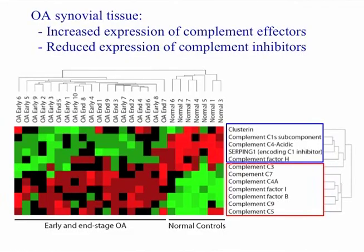We also performed gene array analysis — RNA expression profiling in osteoarthritis versus normal patients. Using bioinformatic clustering, all the osteoarthritis patients grouped together and showed increased expression of multiple complement effector proteins, represented in red. In contrast, synovial tissue from healthy normal individuals had increased expression of multiple complement inhibitors and decreased expression of these complement effector proteins, suggesting a fundamental dysregulation of the genetic program in synovial tissue contributing to the pathogenesis of osteoarthritis.